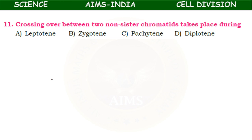Crossing over between two non-sister chromatids takes place during prophase 1. During which phase of prophase 1 does crossing over occur — leptotene, zygotene, pachytene, or diplotene? It is pachytene. During pachytene, the four chromatids are seen in a bivalent, chiasma formation takes place, and crossing over of chromosomes also takes place during the pachytene stage of meiosis 1, prophase 1.